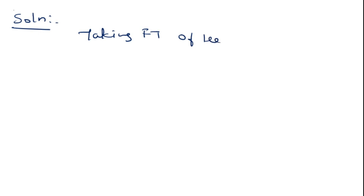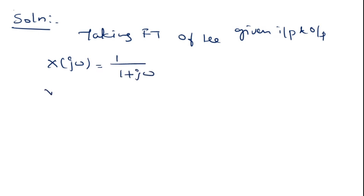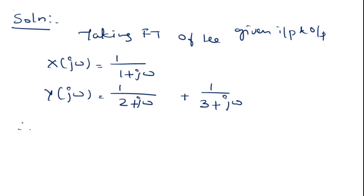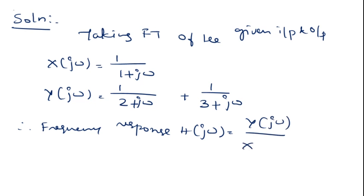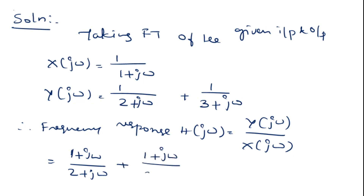Taking the Fourier transform of the given input and output signals, we get X(jω) = 1/(1 + jω) and Y(jω) = 1/(2 + jω) + 1/(3 + jω). Therefore, the frequency response H(jω) = Y(jω) / X(jω), which equals [1/(2 + jω) + 1/(3 + jω)] divided by [1/(1 + jω)].